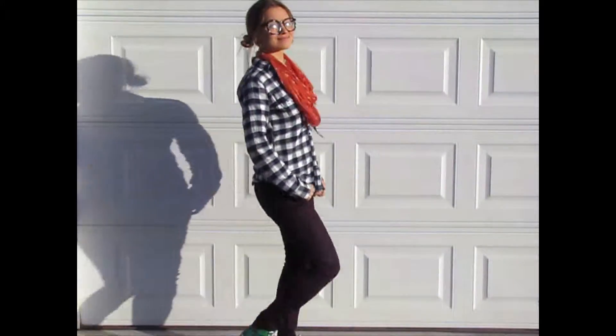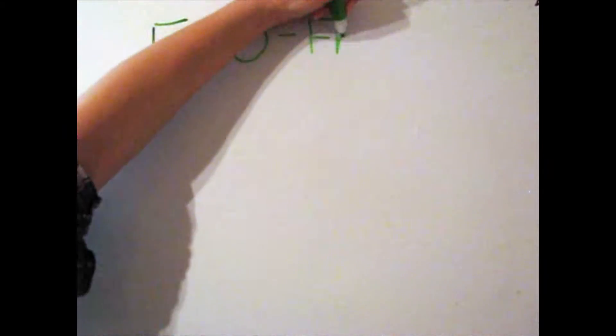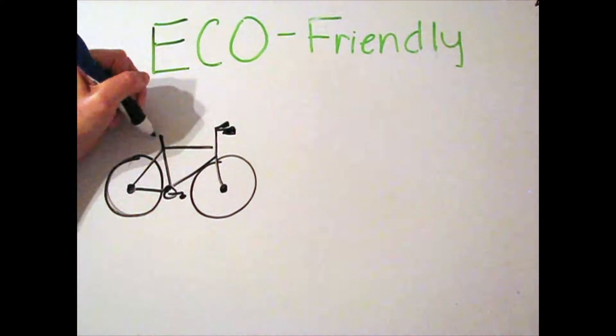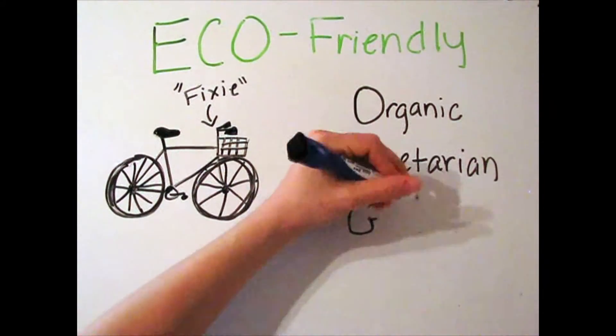It's time to walk the path of a hipster. Actually, biking would be more accurate. Hipsters like to live eco-friendly lives. They ride their fixed-gear bike everywhere and eat organic, vegetarian food that they grow themselves.